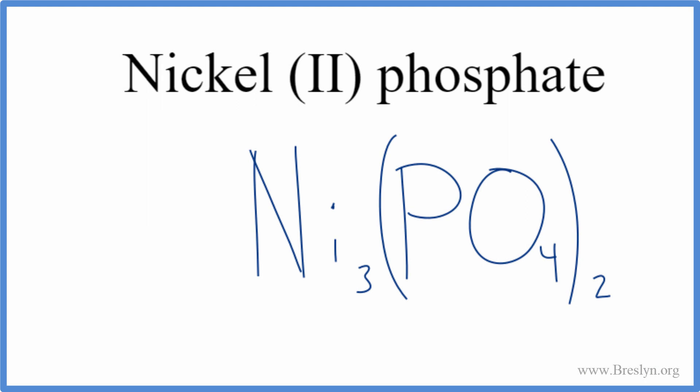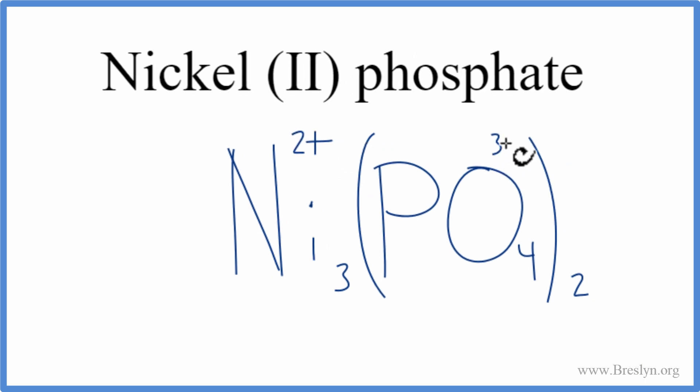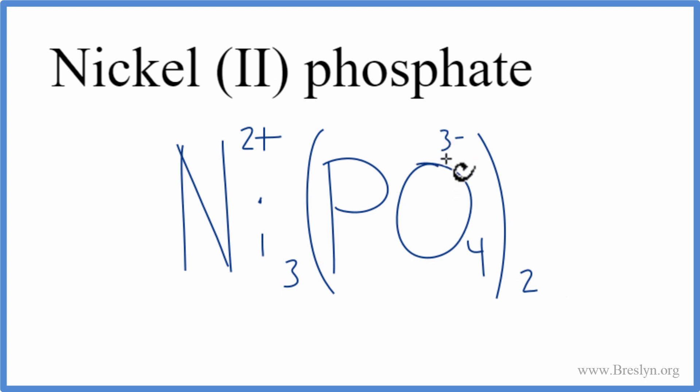Let's check our work to make sure we got it right. We said nickel had a two plus charge because of the Roman numeral there, and we looked the phosphate up. That was three minus. So I have two phosphates. Each one's three minus. Two times three minus. That's six minus.